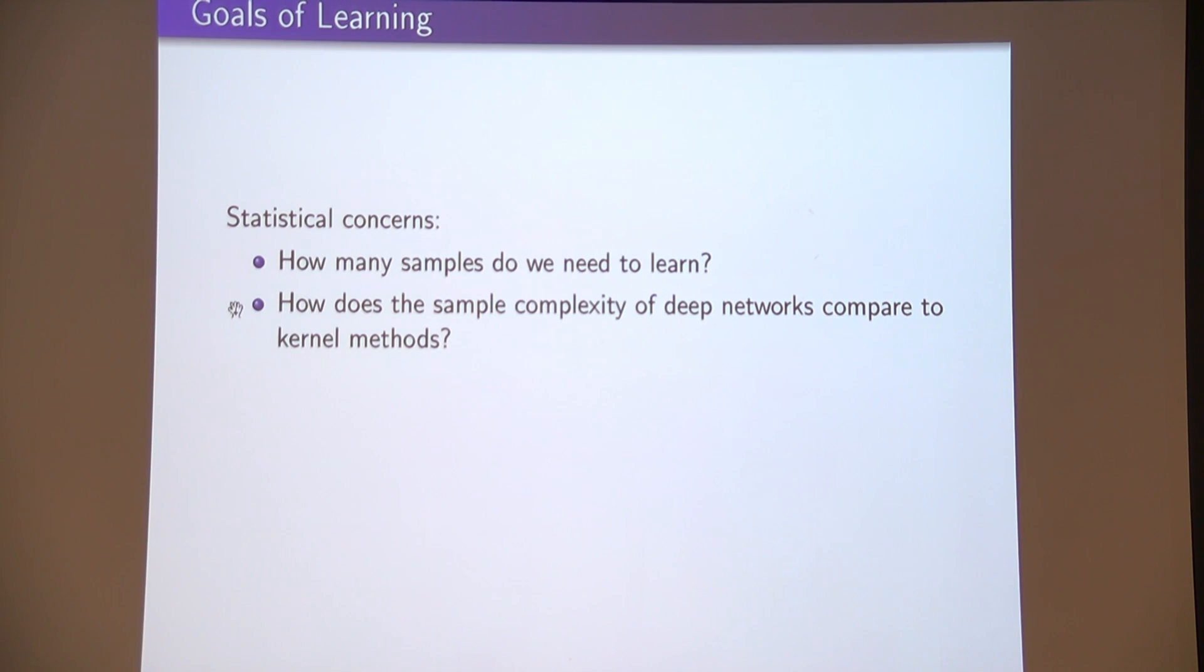Beyond statistical efficiency, of course, it doesn't do us any good if it's possible to statistically learn them, but it takes an exponential amount of time to actually find such classifiers. The other aspect is the time efficiency of the algorithm. Since we know deep learning can be efficiently trained by stochastic gradient descent, we're going to focus particularly on the time complexity only of stochastic gradient.